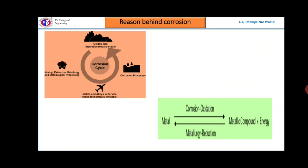Now let us understand, what is the reason behind corrosion? Metals are thermodynamically unstable and formed abundantly in nature.